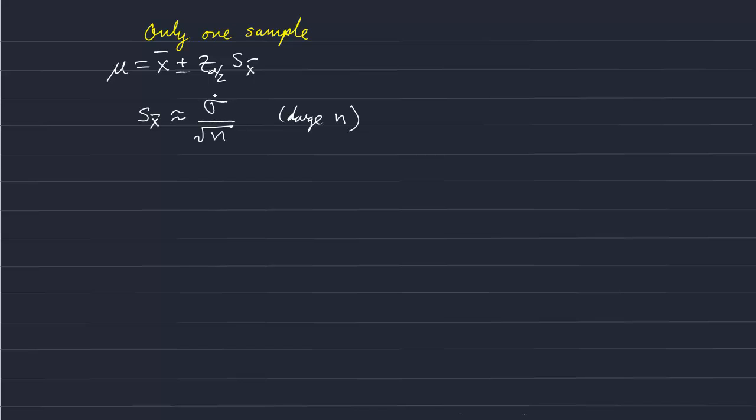But we don't know sigma, we don't know the standard deviation of our population mean, but we do know that we can estimate it from the standard deviation of our sample. Thus, mu is estimated as the sample mean plus and minus z sub alpha over two times our standard deviation of our sample divided by the square root of our size of our sample.